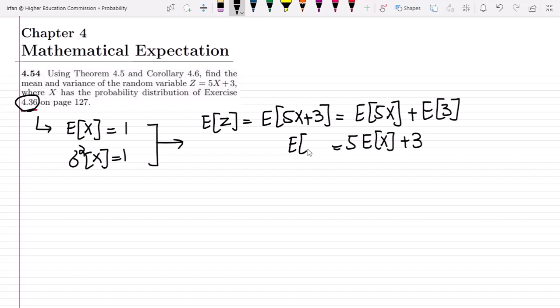So the expected value of Z is given here. Also, the variance would only depend upon the multiplicative term. The variance of Z would be the square of this multiplicative term multiplied by the variance of the original random variable.